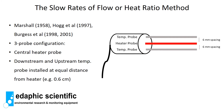The next method is called the slow rates of flow or heat ratio method. Like the compensation heat pulse method, it uses a three-probe configuration — a central heater probe with a downstream and an upstream temperature probe — but in this case the distances between the temperature probes are equal (equidistant), at six millimeters in our example. This was initially proposed by Marshall in 1958. Hogg et al. in 1997 and Burgess in 1998 and 2001 developed it further; Burgess called it the heat ratio method, the name that has since stuck.